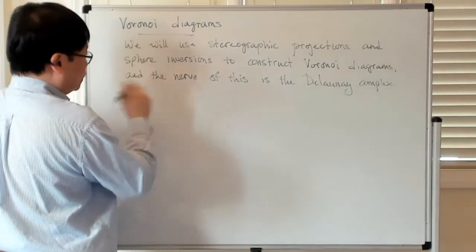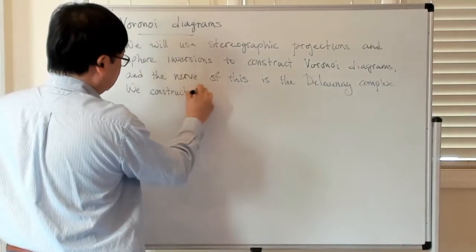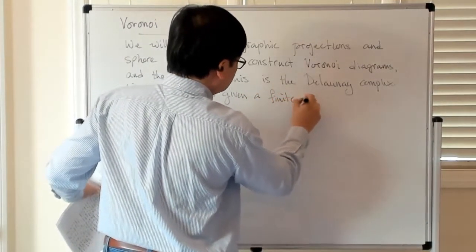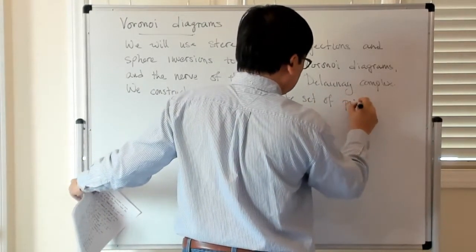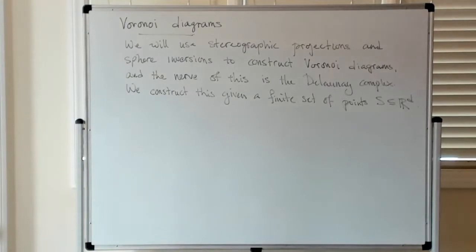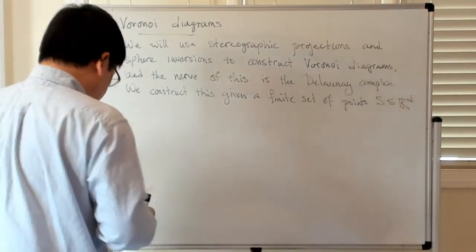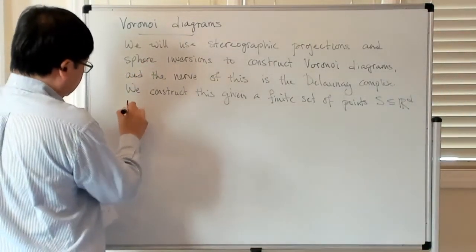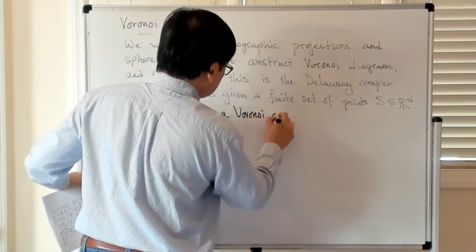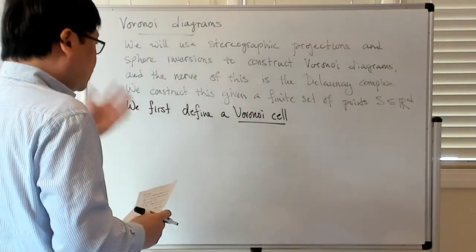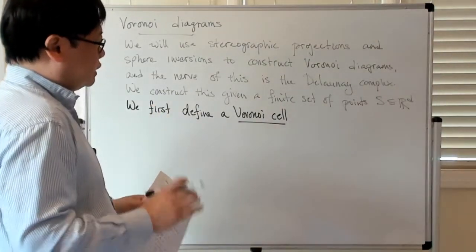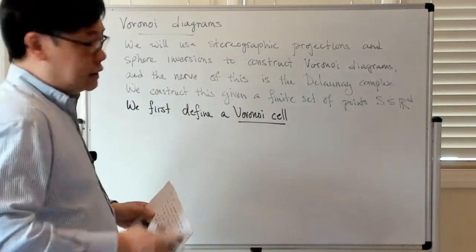We construct this given a finite set of points — let's call that S, which is contained in R^d. So first we define this idea of a Voronoi cell. The basic idea is that you have this set of points, and the Voronoi cell associated with one of those points is the set of points in R^d which is closer to that one point as opposed to the other points in the set S.